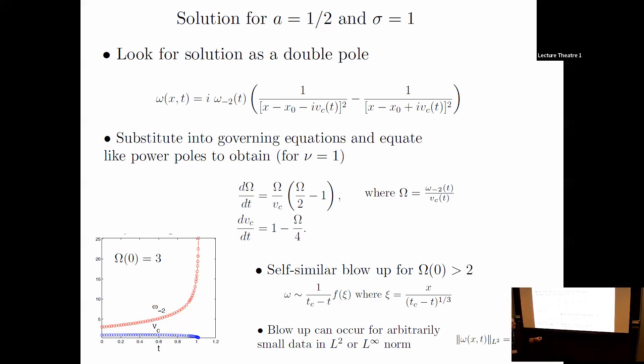This is the simplest one we found. You can analyze singularities in this. There are two equilibrium points, zero and two. Two is unstable, zero is stable. Omega is a redefined parameter—amplitude and singularity position. There's self-similar blowup when this is bigger than two, and no blowup when it's less than two. Here I'm showing a computation when omega is three. The amplitude blows up and the singularity goes to the real line. That's blowup.